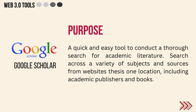Our last tool on the list is Google Scholar — a quick and easy tool to conduct a thorough search for academic literature. You can search across a variety of subjects and sources from one location, including academic publishers, theses, and books. The difference between Google and Google Scholar is that while Google searches the entire web, Google Scholar limits its searches to only academic journal articles.